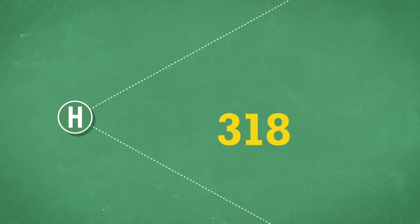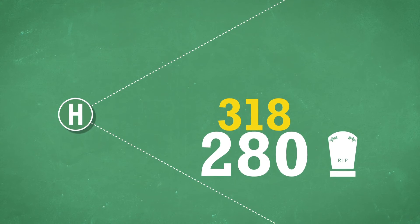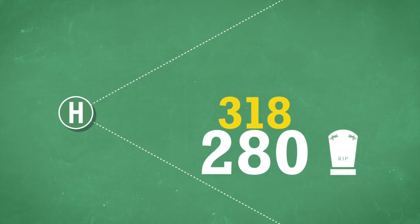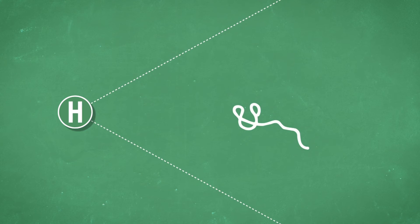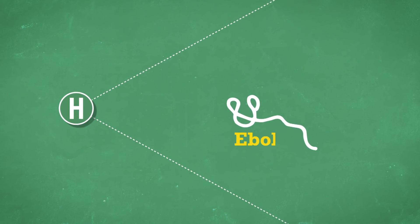During the outbreak, 318 people were infected, and 280 died in villages in the region. The virus was given the name of a local river, Ebola.